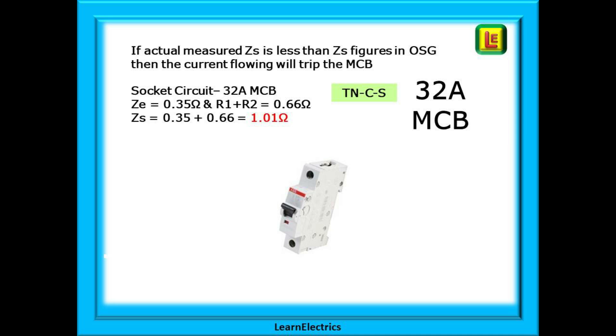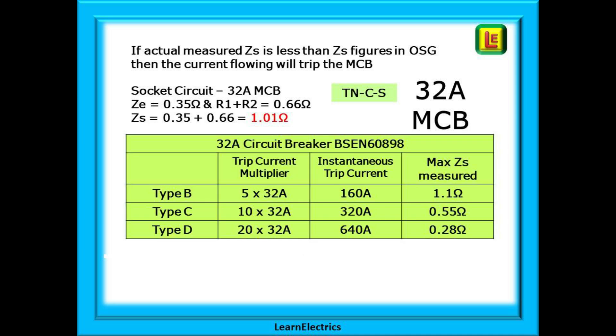Go on now and consider a 32 amp socket circuit. It is still a TNCS system and the ZE remains at the maximum of 0.35 ohms. The R1 plus R2 this time is 0.66 ohms. So ZS must be 0.35 plus 0.66 which is 1.01 ohms. Looking at the table for 32 amp breakers, we note that with an actual ZS of 1.01 ohms, the circuit is just below the permitted maximum of 1.1 ohms for a type B. But the types C and D are both outside the specified range. Making comparisons like this will help you to design and install circuits safely and correctly and comply with the wiring regulations and the building regulations.